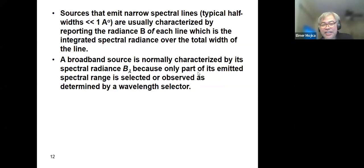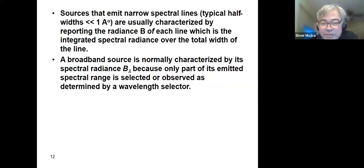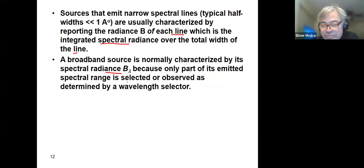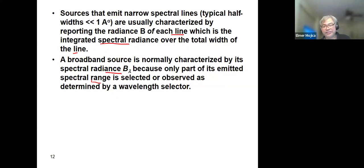Sources that emit narrow spectral lines — typically half-width less than one angstrom — are usually characterized by reporting the radiance of each line, which is the integrated spectral radiance over the total width of the line. Broadband sources are normally characterized by spectral radiance because only part of the emitted spectral range is selected, as determined by a wavelength selector.